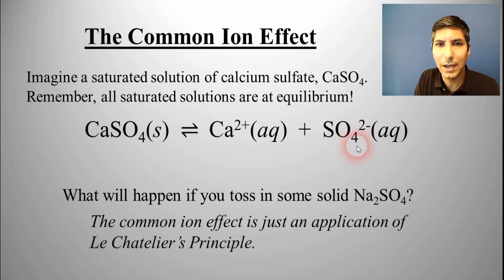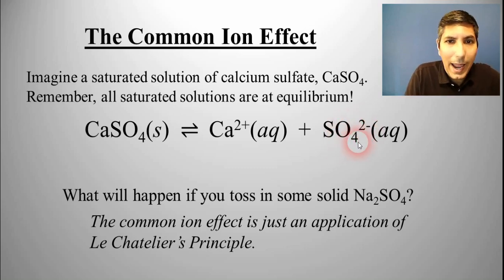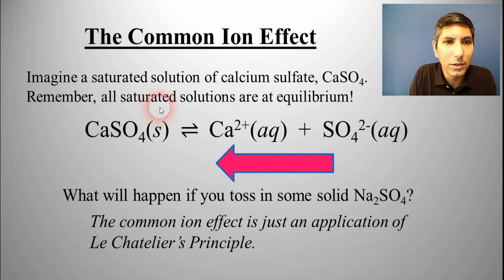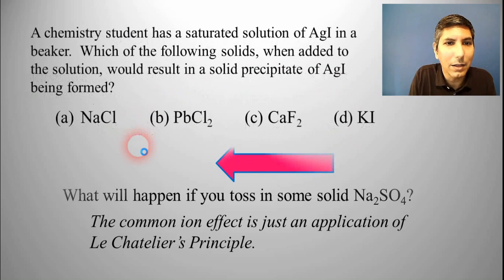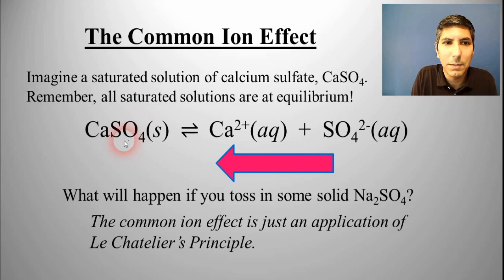Well, this sulfate ion being added into something at equilibrium is exactly what happens in Le Chatelier's principle, like we talked about in an earlier video in this unit. We are adding in the sulfate, which is a product, so guess what? It's going to shift the equilibrium in the other direction, which means we're going to shift it to the left,